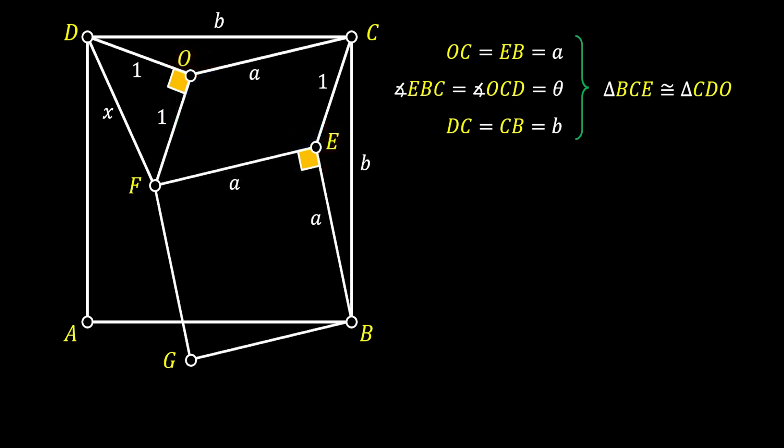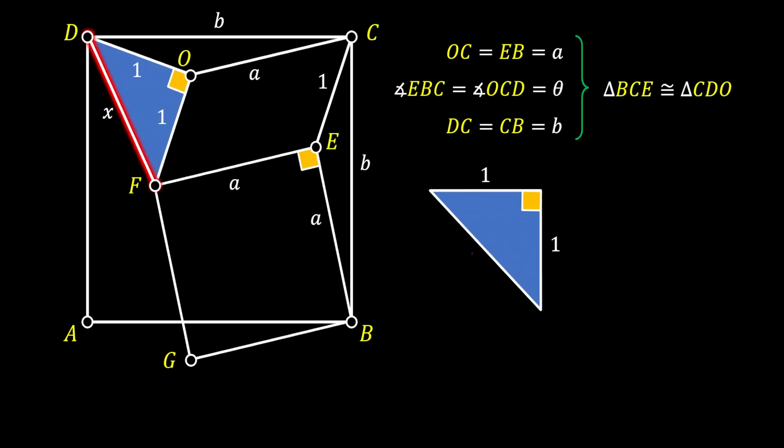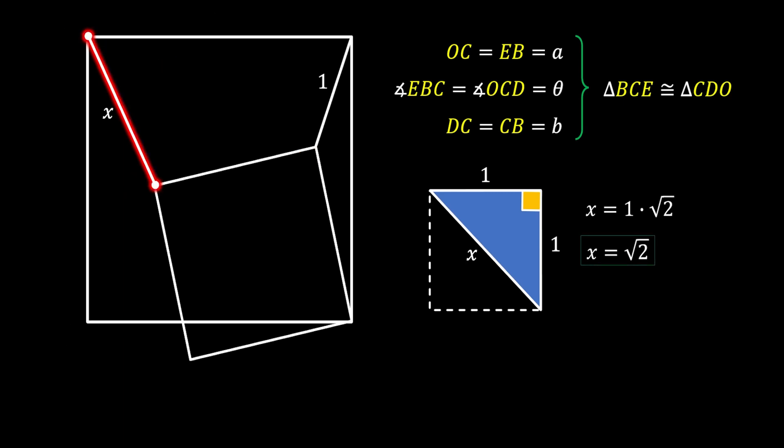Alright, so now we can try to find the length of X. And to do this, we will use the triangle DOF. If we isolate this triangle, you can notice that this is an isosceles right triangle with the side of 1. And it represents the half of the square. So, X is nothing but the diagonal of the square, which we can calculate as side times square root of 2. And we will get that X is equal to square root of 2. And this is our solution.